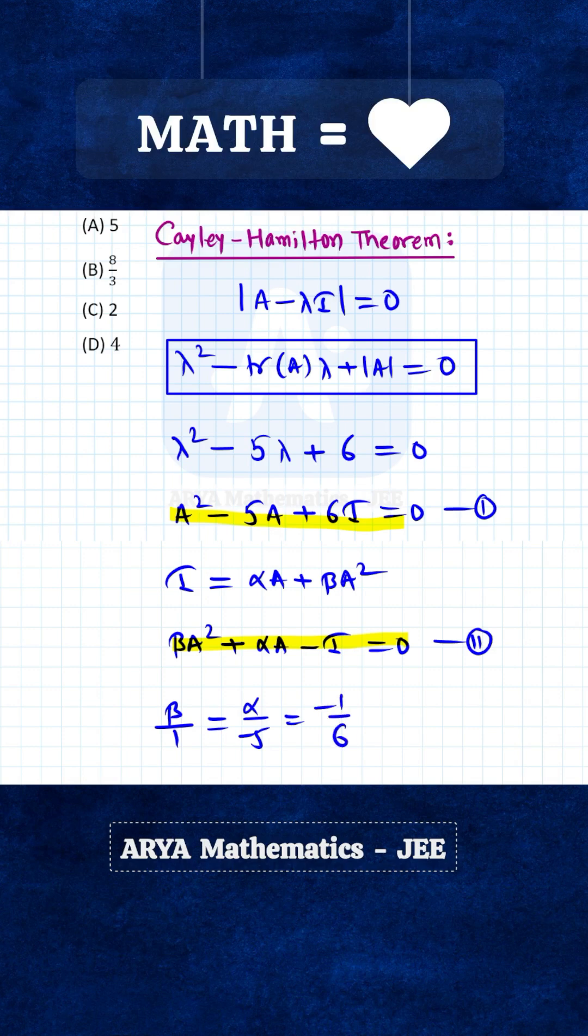The coefficients of A², A, and identity matrix are proportional. From here you will get α = 5/6 and β = -1/6.